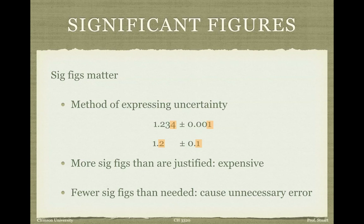Using too few sig figs can also cause problems. If you have a solution whose concentration you need to know to the hundredth of a molar, or an amount of substance to the hundredth of a gram, and you round off more aggressively than you should, you end up with incorrect concentrations or amounts of material that can affect what happens in a chemical reaction.